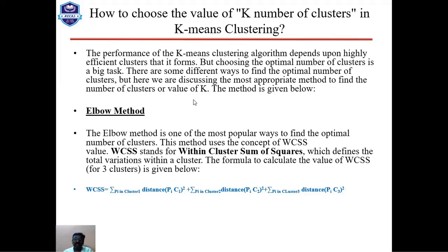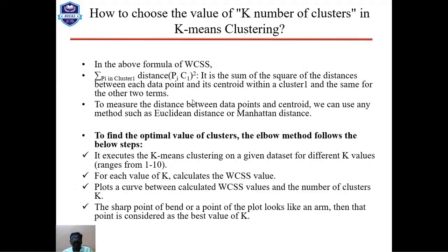WCSS defines the total variations within the clusters. The formula to calculate WCSS for three clusters is: WCSS = Σ(pi in cluster 1) distance(pi, C1)² + Σ(pi in cluster 2) distance(pi, C2)² + Σ(pi in cluster 3) distance(pi, C3)². In this formula, each term is the sum of squared distances between each data point and its centroid within a cluster.